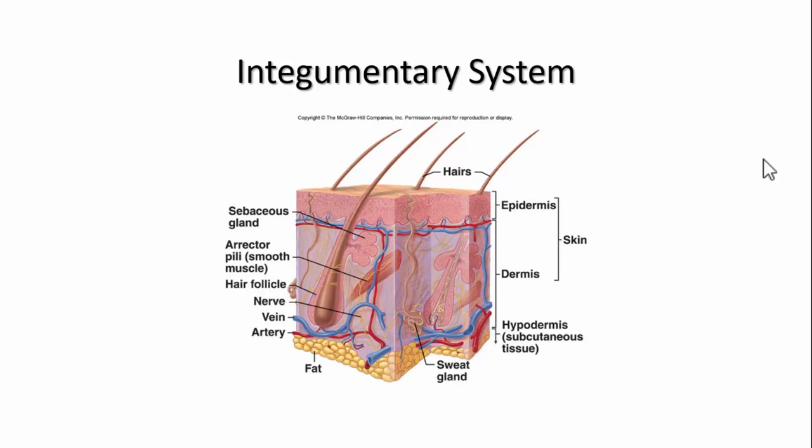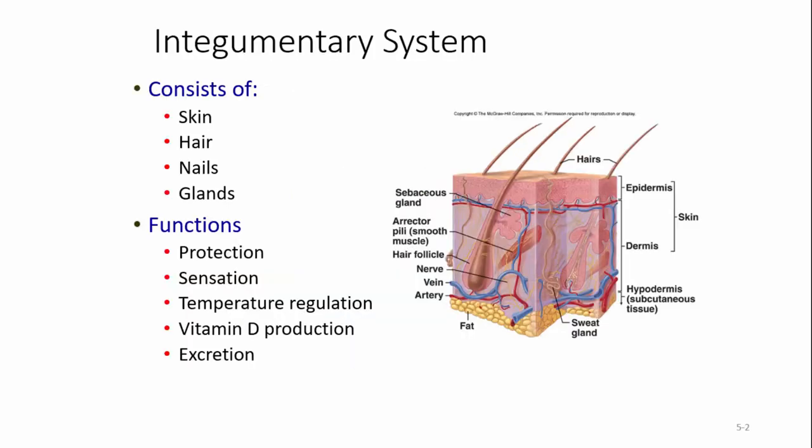In this lecture, we're going to look at the integumentary system. The integumentary system consists of your skin, your hair, nails, and glands. Its function is protection — basically protection from the environment, protection from infection. Your skin is the first line of defense against infection, and protection from heat, from cold, from dehydration. There are a lot of things that the skin protects from.